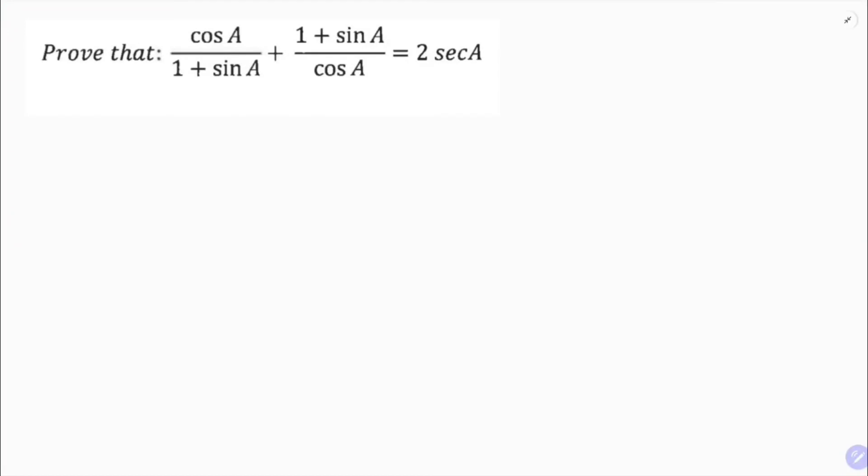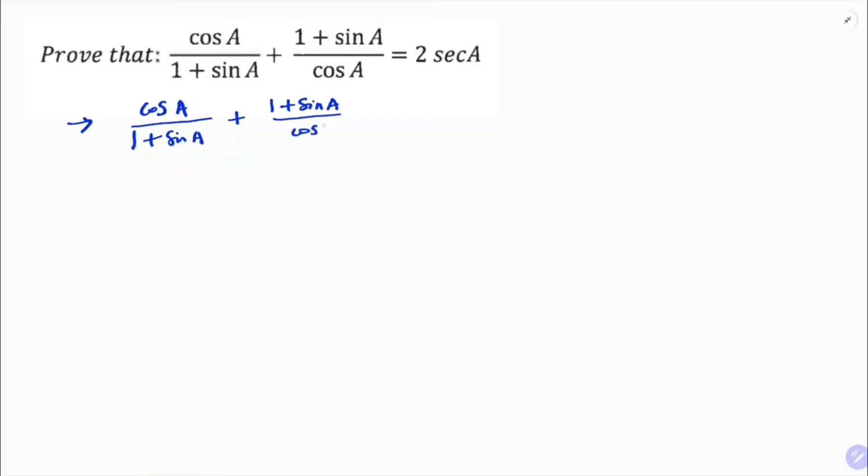Prove that cos A by 1 plus sin A plus 1 plus sin A by cos A equals 2 sec A. So if we take LHS here, cos A by 1 plus sin A plus 1 plus sin A by cos A.